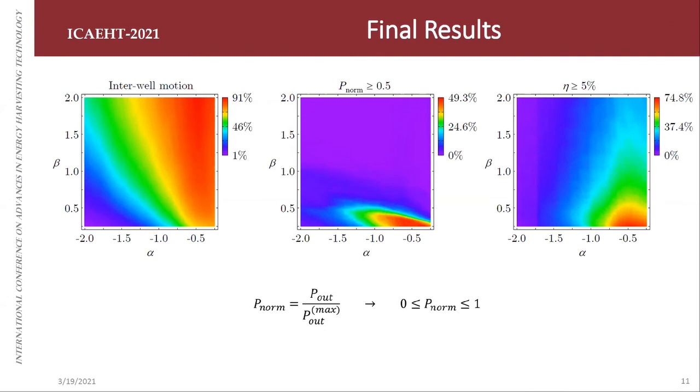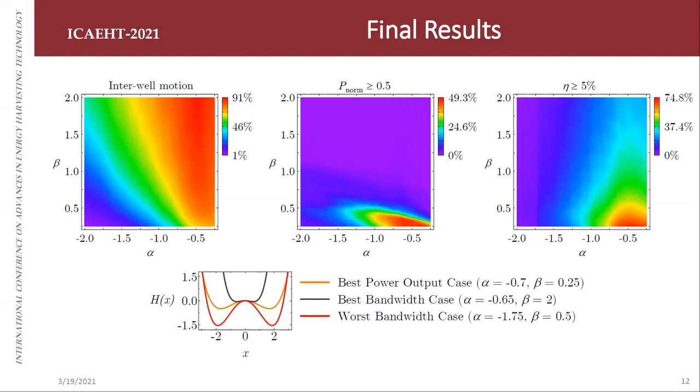So we tried to show some examples and associated this result with the shape of the potential function of the system. Here we have some cases for examples. In the orange here, you can see an example of best power output case. In black here, you can see a case for best bandwidth case. And in red here, you can see a shape for a worst case scenario for everything: bandwidth, efficiency and power.